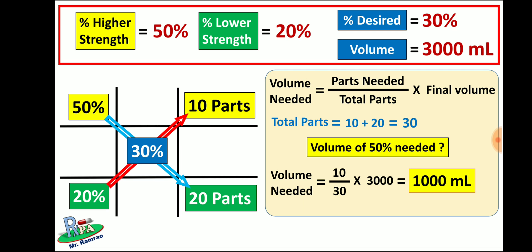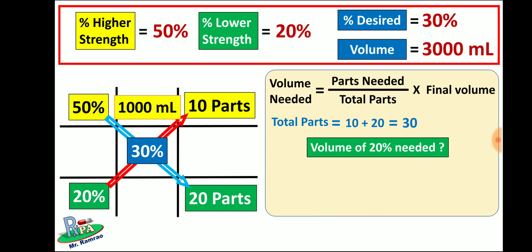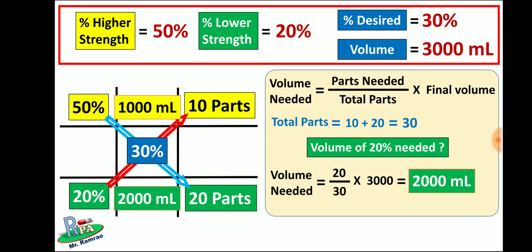So 1000 ml of 50% is needed for the mixture. In the same way, calculate the volume of 20% needed: volume needed = (20 / 30) × 3000 ml, which after calculation gives 2000 ml. That means for the mixture you have to use 2000 ml of 20% dextrose solution.